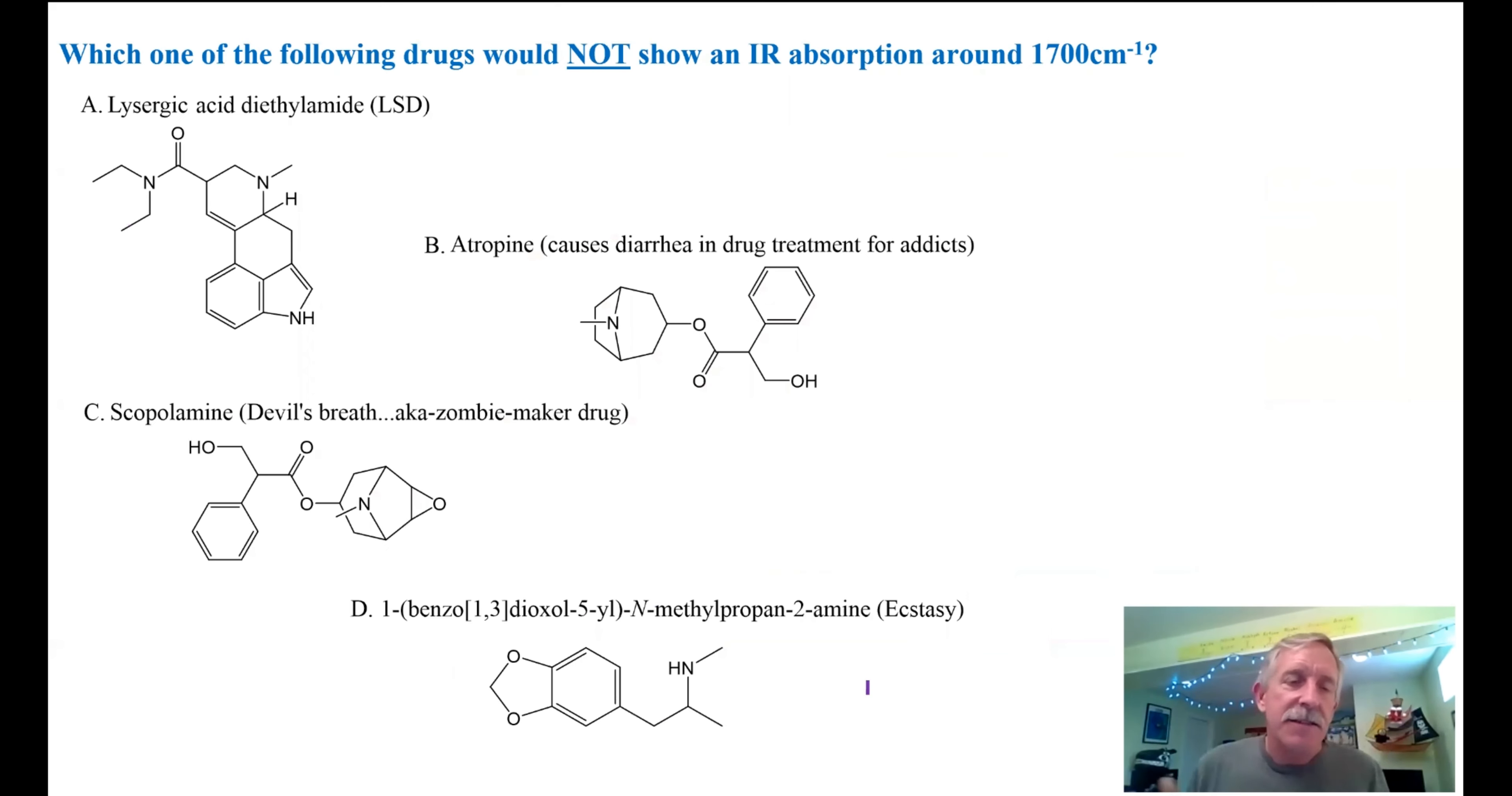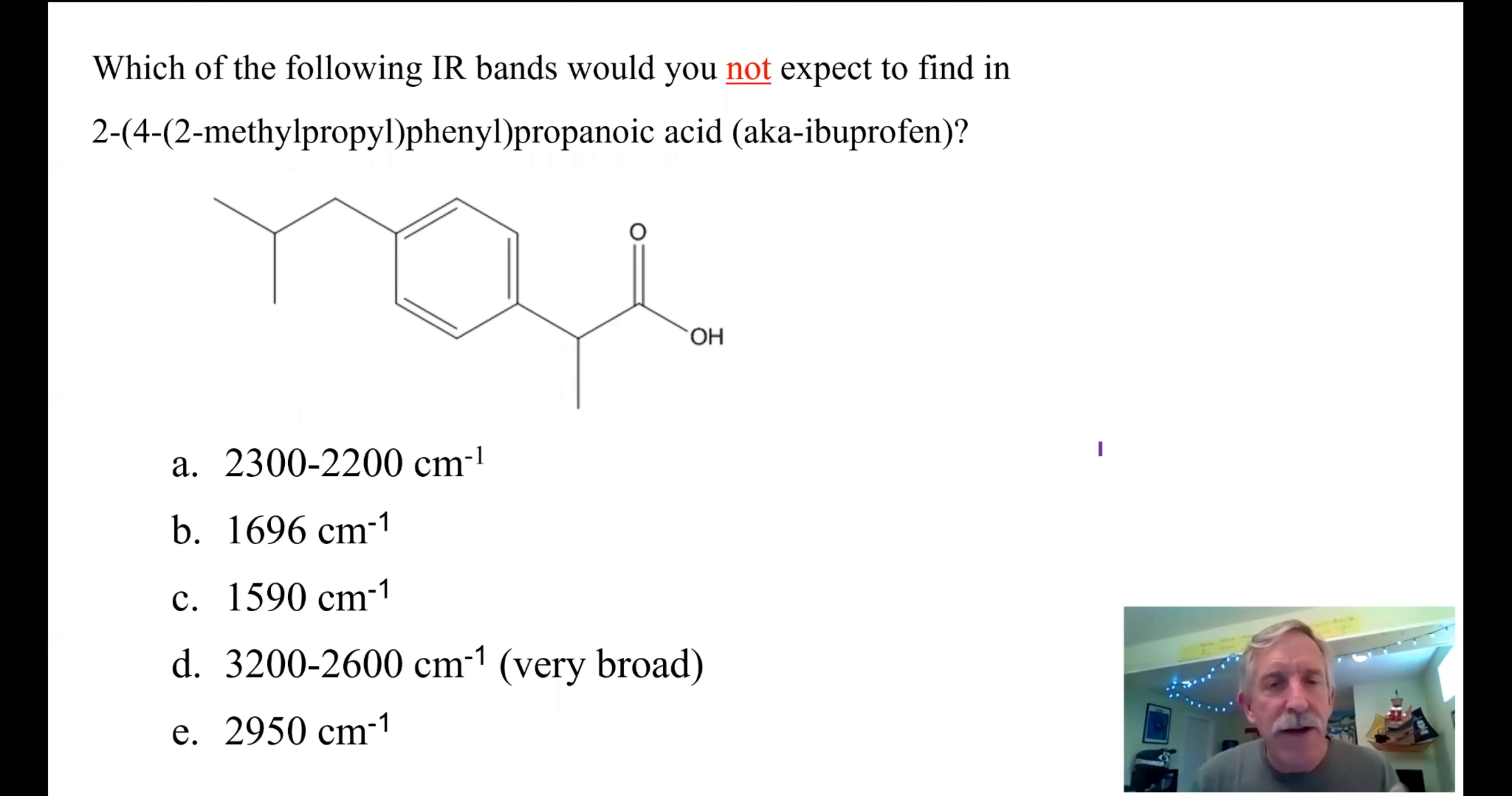For class, please try to look at these weird and cool drugs and see which one of these will not show an IR absorption around 1700-ish. Come to class and talk about it with your study group members and see if you can figure that out. Practice, practice, practice. The more IRs you see, the better you're going to get. So which of the following IR bands here in the multiple choice would you not expect to find in ibuprofen? Now you can identify ibuprofen separate from say morphine or caffeine and therefore use IR to make sure you're taking the right drug. Very important. Try to come to class with an answer for this one and check on it with your study group members.